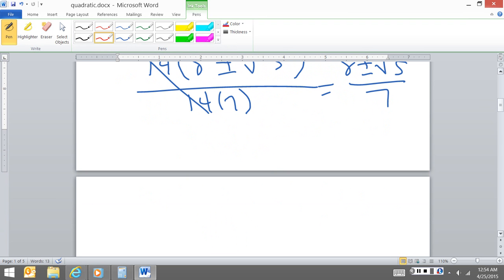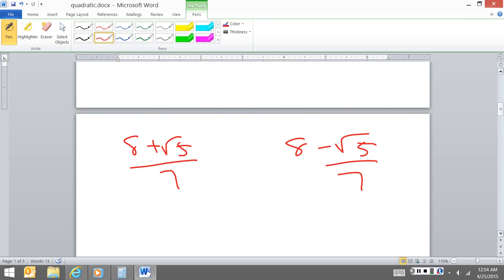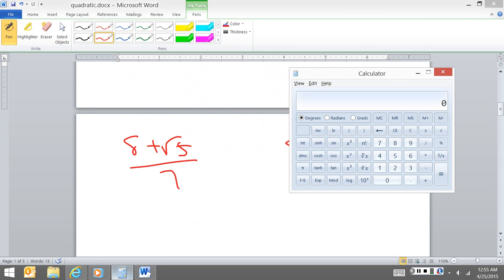I would get out my calculator and I'd go, okay, I take the square root of 5. And then I would add 8. And then I would divide by 7. And I would get 1.46, 1.41.